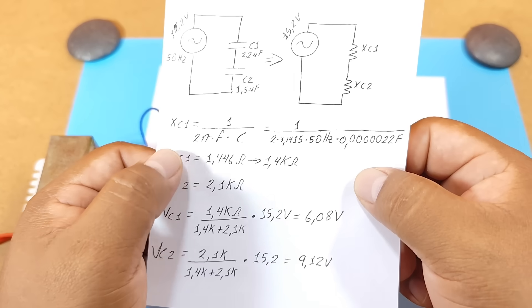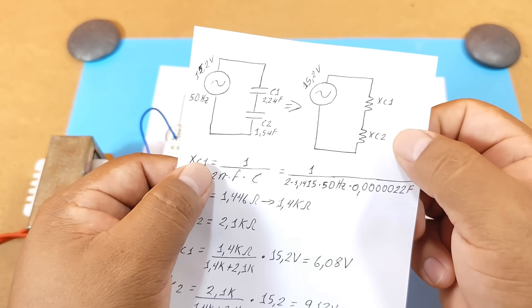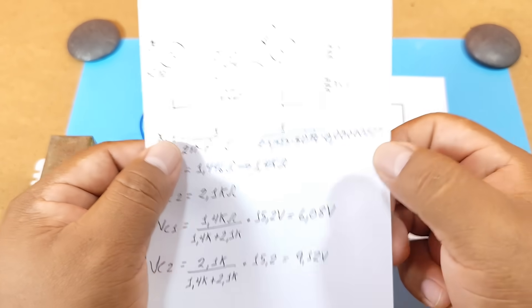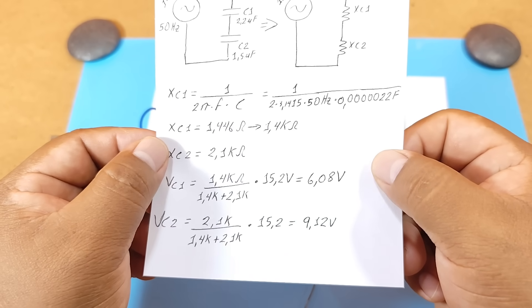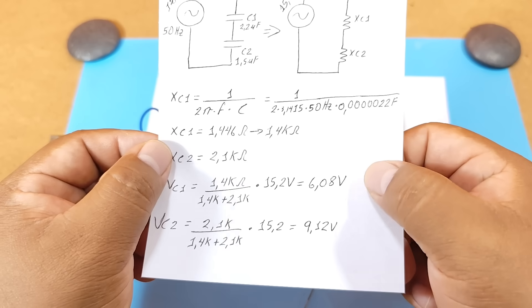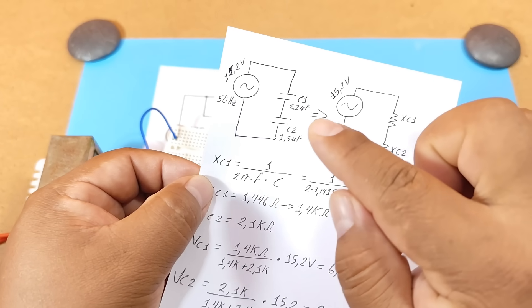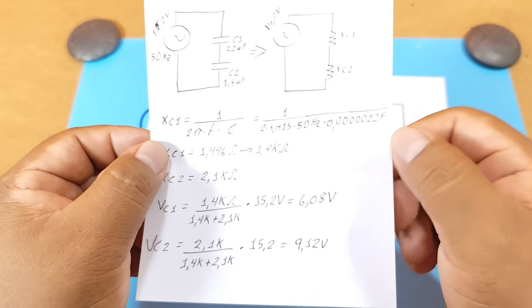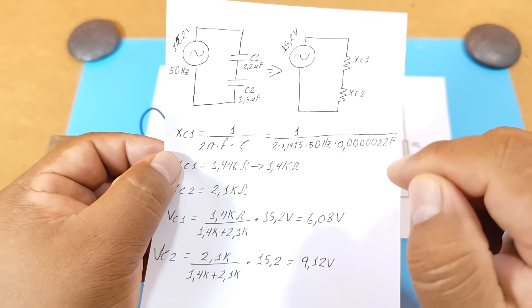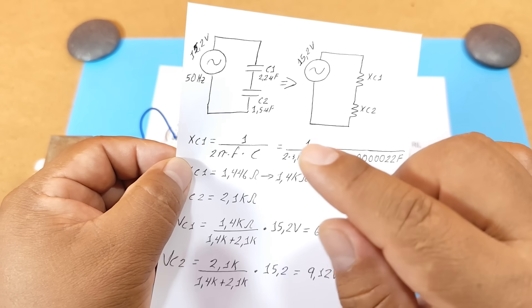Therefore, with this we can calculate how much is the voltage in each capacitor. According to this, we have a voltage of 6.8 volts across C1, or the 2.2 microfarad capacitor, and 9 volts across C2, or the 1.5 microfarad capacitor.